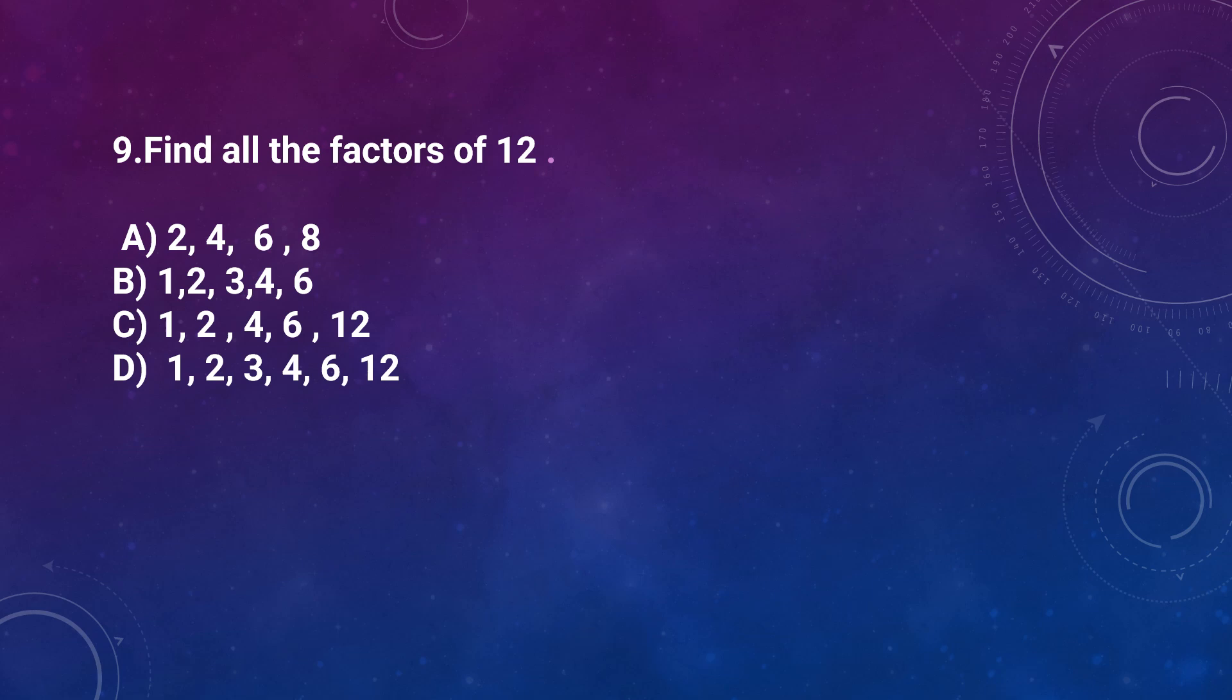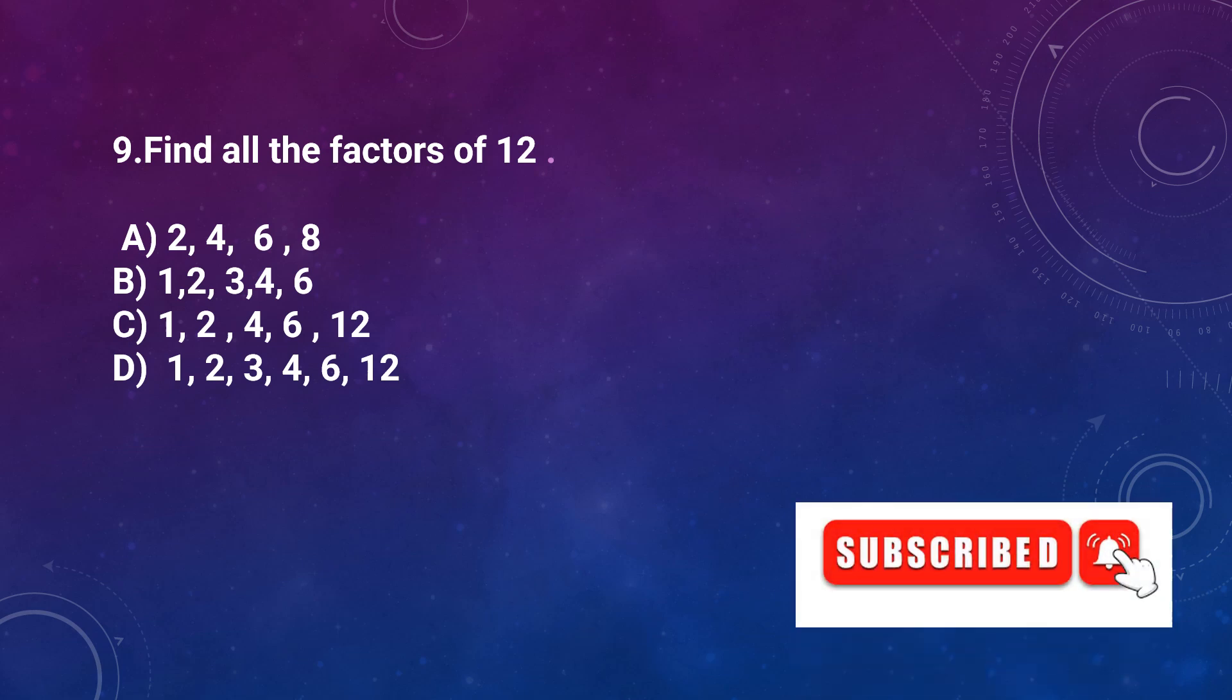Question number 9: Find all the factors of 12. Option A: 2, 4, 6, 8, Option B: 1, 2, 3, 4, 6, Option C: 1, 2, 4, 6, 12, Option D: 1, 2, 3, 4, 6, 12. If we factorize 12, we get 1, 2, 6, 3 and 4. So factors of 12 are 1, 2, 3, 4, 6, 12.